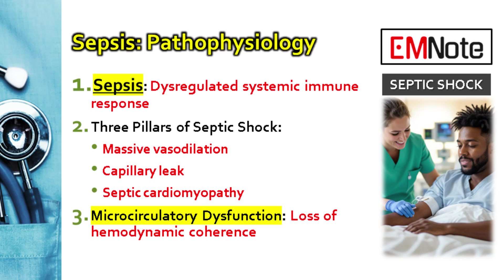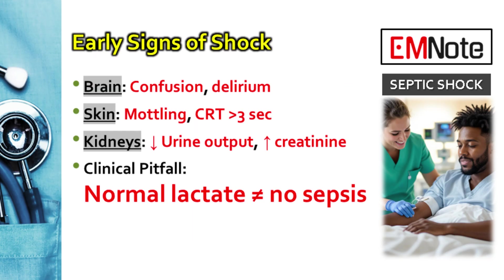The result of all that is failure at the micro level — the microcirculation fails. That's the hemodynamic coherence problem, where big numbers like BP don't match what's happening to the cells. Over 30% of these patients have vague symptoms initially, so you can't just wait for the blood pressure to plummet. We need those canaries in the coal mine — signs that organs aren't getting enough oxygen.